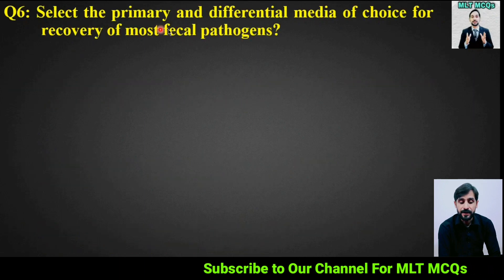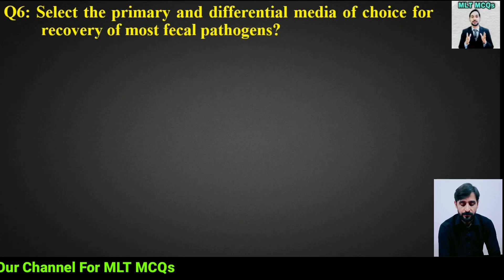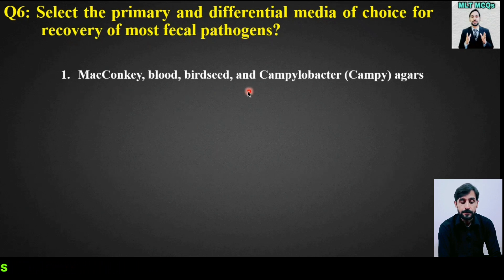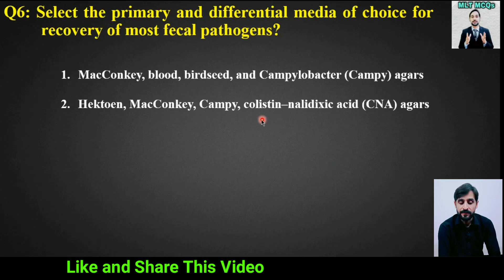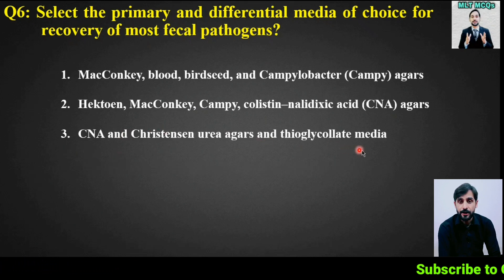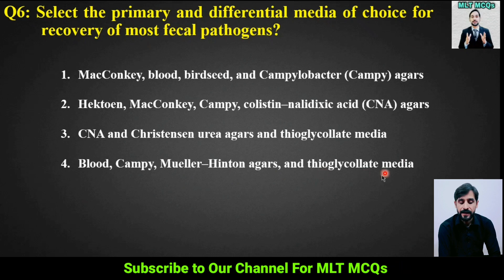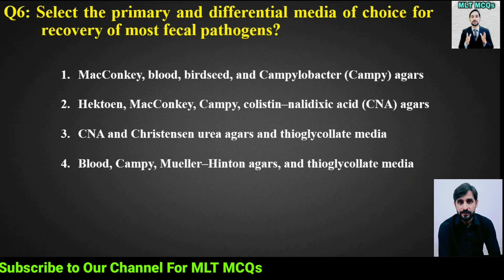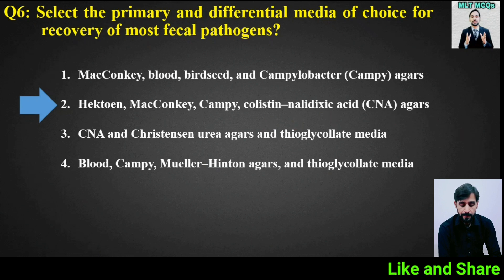MCQ number 6: Select the primary and differential media of choice for recovery of most fecal pathogens. Options: (1) MacConkey, blood, bird seed, and Campylobacter agar; (2) Hektoen, MacConkey, Campylobacter colistin nalidixic acid agar; (3) CNA and Christensen urea agar and thioglycolate media. The right answer is option 2: Hektoen, MacConkey, Campylobacter colistin nalidixic acid agar.